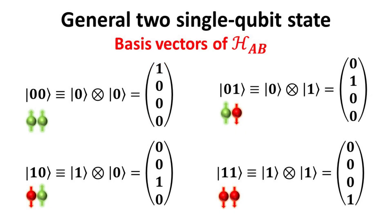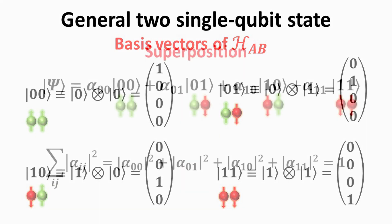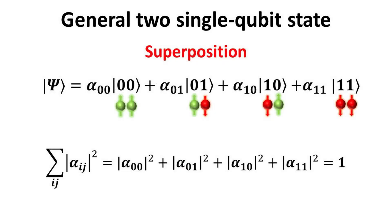Since the state vector of the composite two-qubit system is a four-dimensional vector, there are a total of four basis vectors. They are given by the zero-tensor-zero ket, one-tensor-zero ket, zero-tensor-one ket, and one-tensor-one ket. The general two-qubit composite state vector can then be written as a superposition of these basis state vectors, where the amplitudes alpha_00, alpha_01, alpha_10, and alpha_11 must satisfy the normalization condition as shown.